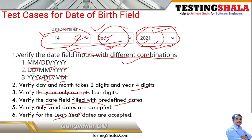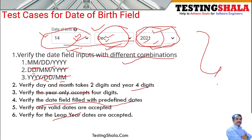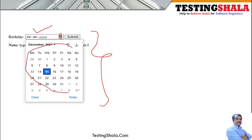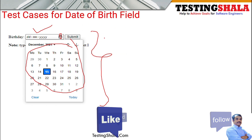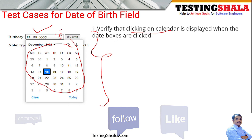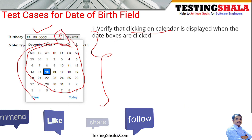The 30th and 31st dates won't be there in February. This is one way of verifying the first type of date of birth field. Now moving on to the second type — it will look like a birthday text field with a calendar icon. If you click on the calendar icon, a calendar window should pop up.